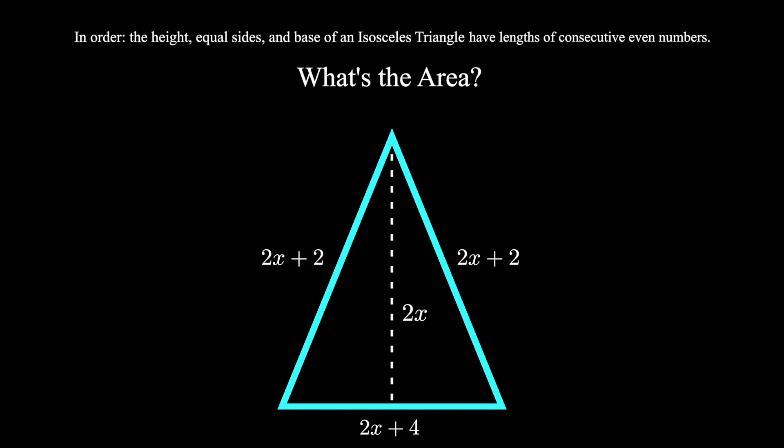Fortunately for an isosceles triangle, the height splits this base in half. We can split the base into x plus 2 and x plus 2, creating a right triangle.